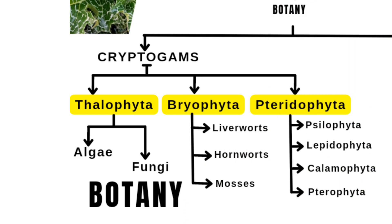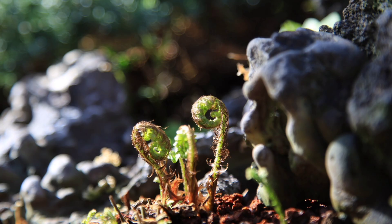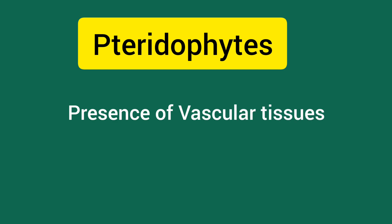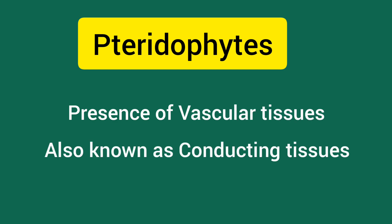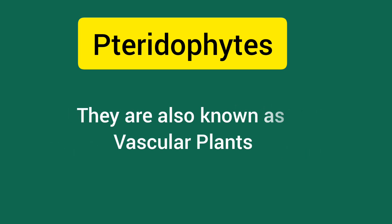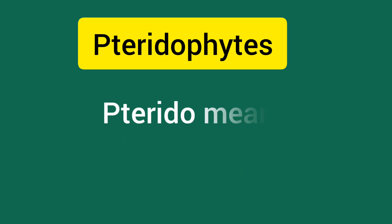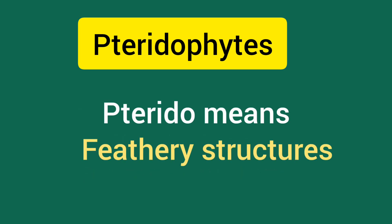The third group is Pteridophyta, which is more developed than Thallophyta and Bryophyta. Unlike Thallophyta and Bryophyta, Pteridophyta has vascular tissues, also known as conducting tissues. That is why they are also called vascular plants. Xylem and phloem are present in these plants, which conduct water and food materials. 'Pterido' means feathery structures — they have compound leaves with a feather-like structure.